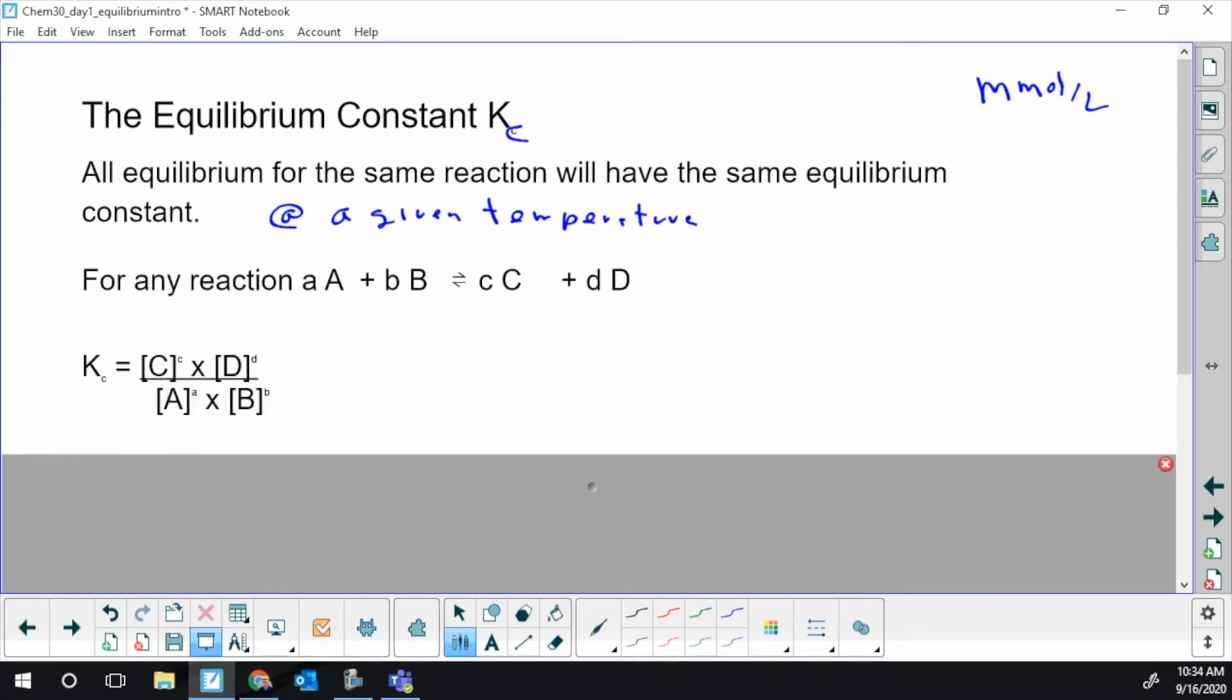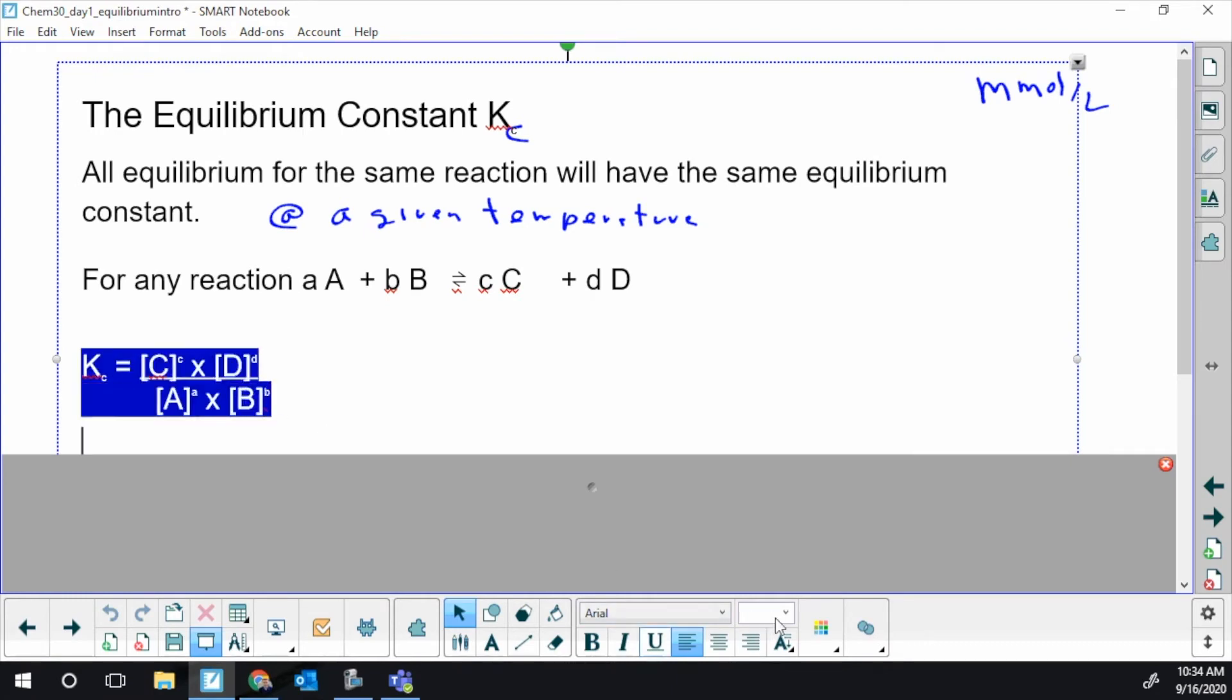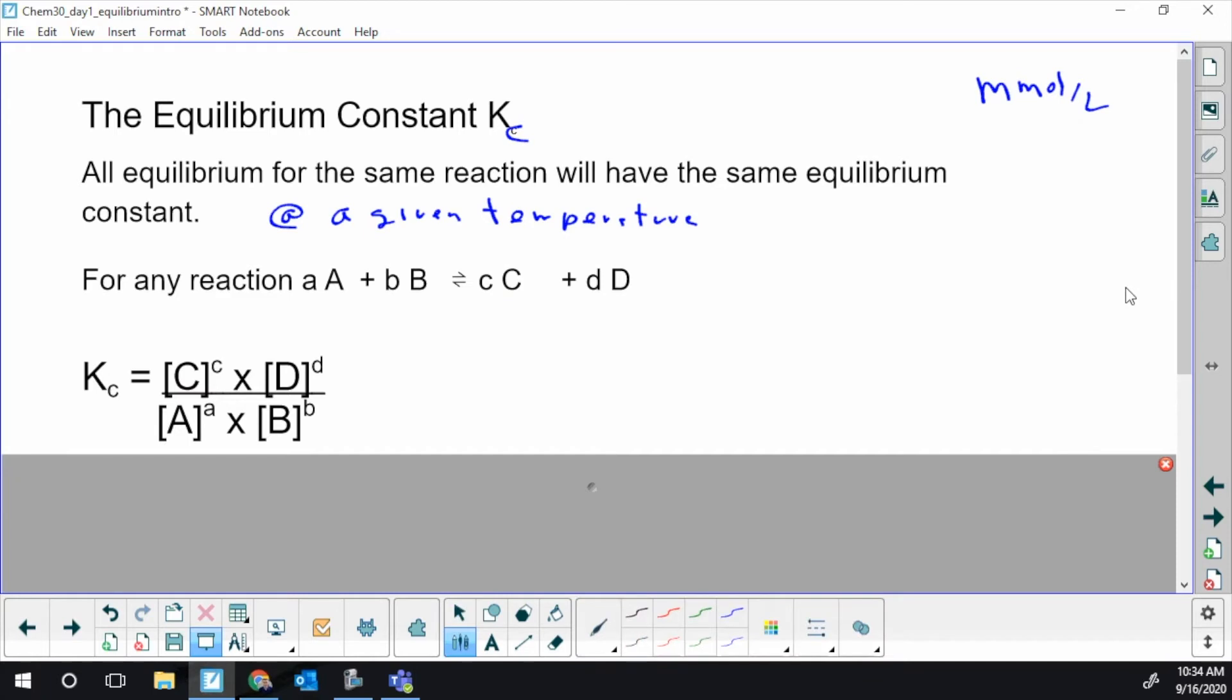This is the format for equilibrium law expression. You take the concentration - in chemistry, square brackets means concentration. Take the concentration of your first product raised to the power of its stoichiometric coefficient, multiply by the next product its concentration raised to the power of how many there are. Divide it by the same format for the reactants - concentration of the first reactant to its power times the second reactant to its power.